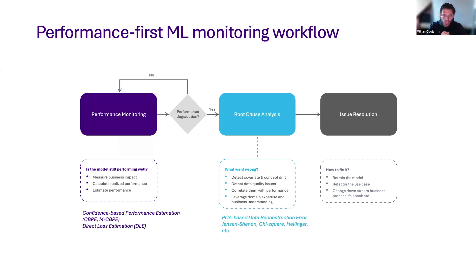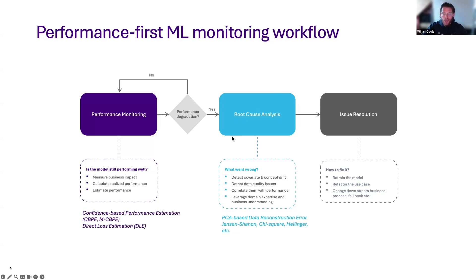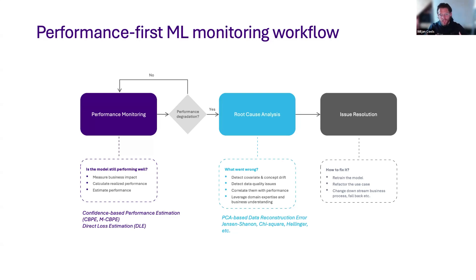That's how we came up with our performance-first ML monitoring workflow. Model performance is the most important thing, and because we've developed algorithms that can estimate performance, we focus on performance first. When there is a performance degradation, only then do we go into root cause mode — using covariate shift detection, multivariate data drift detection, concept shift detection, and data quality issue detection algorithms to come up with an actual root cause, not as an alerting mechanism but to figure out what went wrong. When we've established the underlying root cause, we can then go into resolving the issue — retraining the model, refactoring the use case, re-weighting examples, or falling back to the previous model. This workflow allows data scientists to be more efficient with their model monitoring.